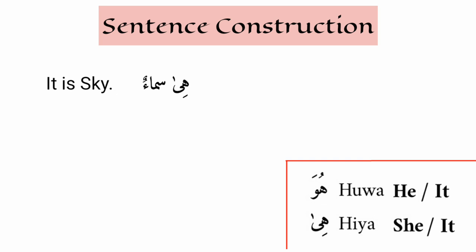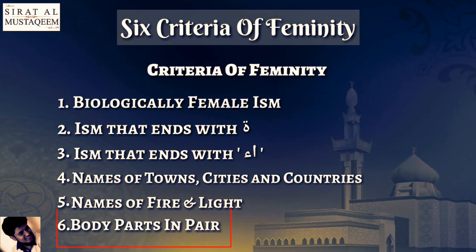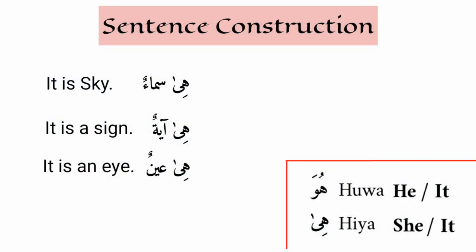Sama is feminine because it ends with alif followed by hamza, so hiya samaun, not huwa samaun. It is a sign — hiya ayatun. Ayah is feminine because it ends with ta marbuta. It is an eye — hiya ayinun. Ayin is feminine because it is a body part that appears in pairs.